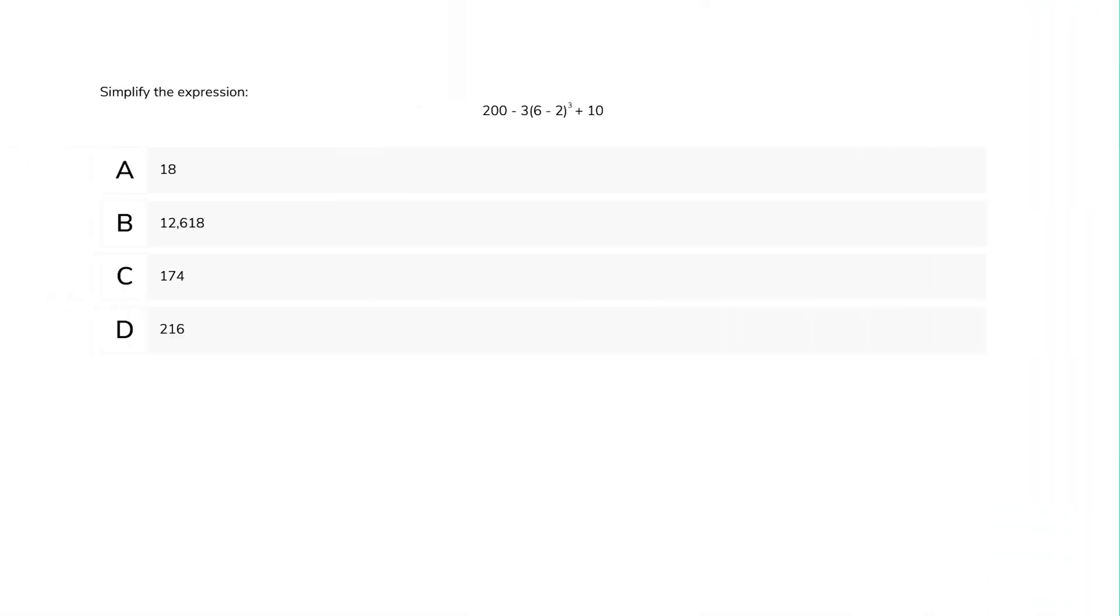How about PEMDAS? Simplify the expression. Parentheses are addressed first. So the first step in this problem is to perform the subtraction of 6 minus 2 equals 4. From there, the problem becomes 200 minus 3 times 4 plus 10.